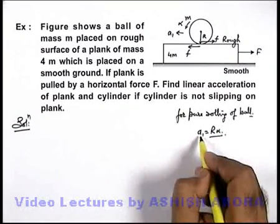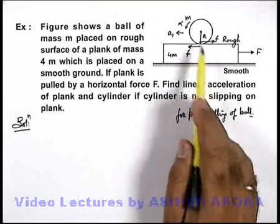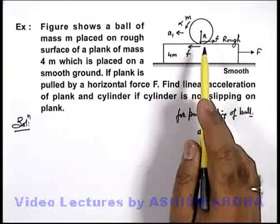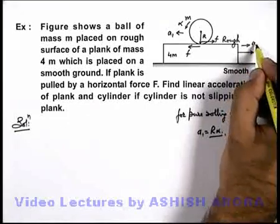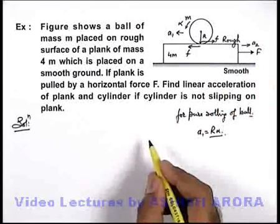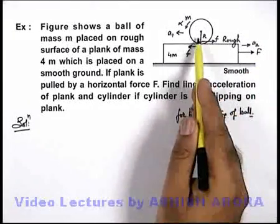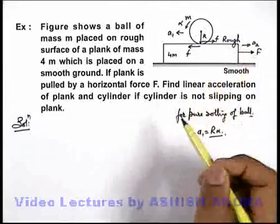Here be careful that as we have taken pure rolling on plank, so a1 is the acceleration of ball with respect to plank. However we can take that plank is moving forward with acceleration a2. So net acceleration of ball in forward direction can be written as a2 minus a1.